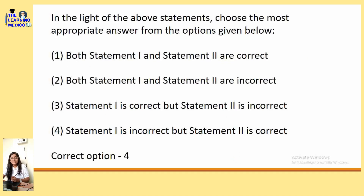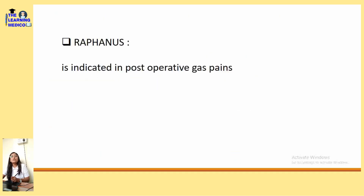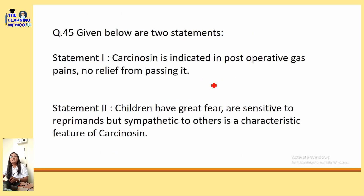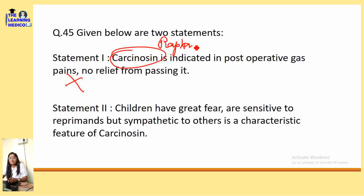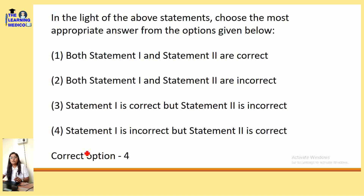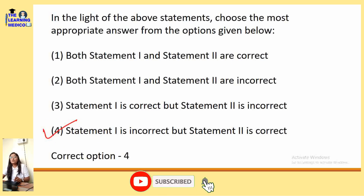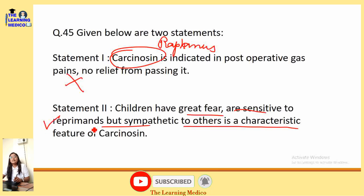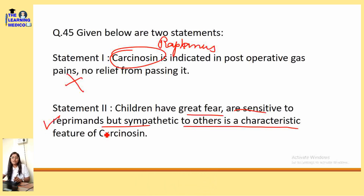Being sympathetic to others is the characteristic feature of Carcinosin. Statement 1 is wrong — Rafinesque is indicated, not Carcinosin. Statement 1 is incorrect and statement 2 is correct. Carcinosin patients have a great fear, are sensitive, but being sympathetic to others is the characteristic feature of Carcinosin.